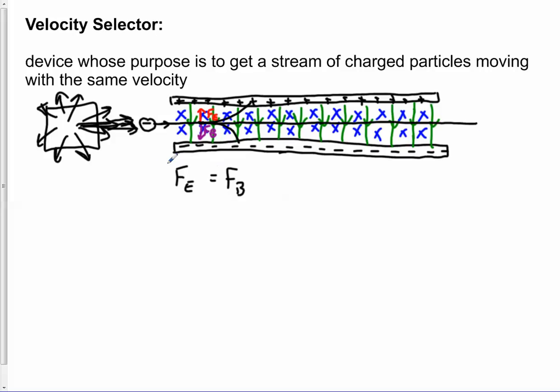So if this condition is true, those electrons will get through. Now let's explore this condition. The electric force is q times the electric field. The magnetic force is q times the speed times the magnetic field times sine of theta.